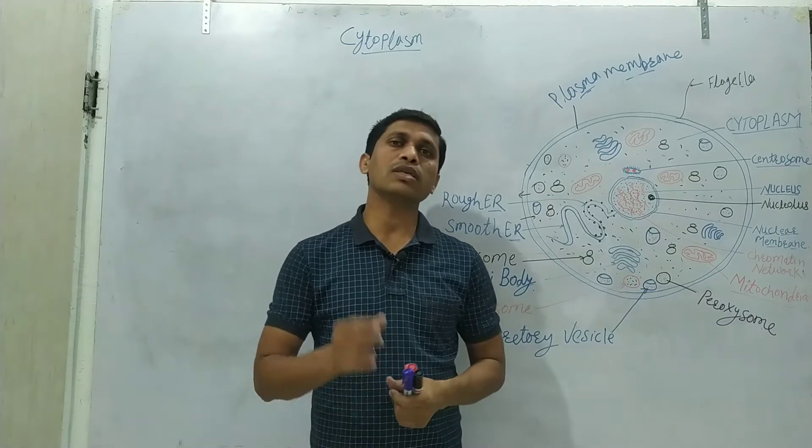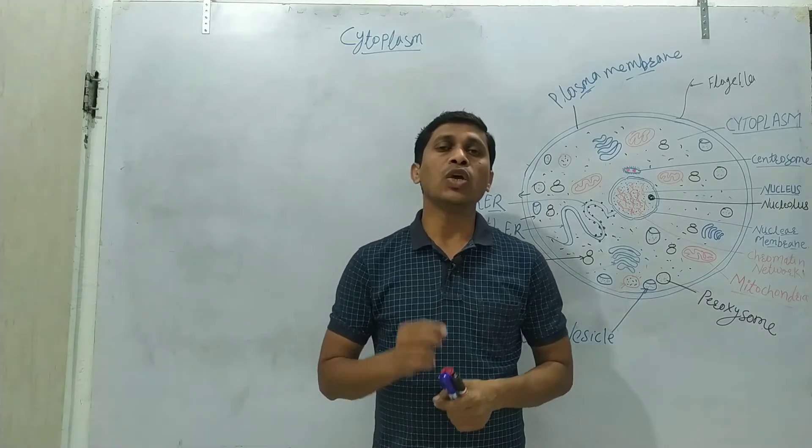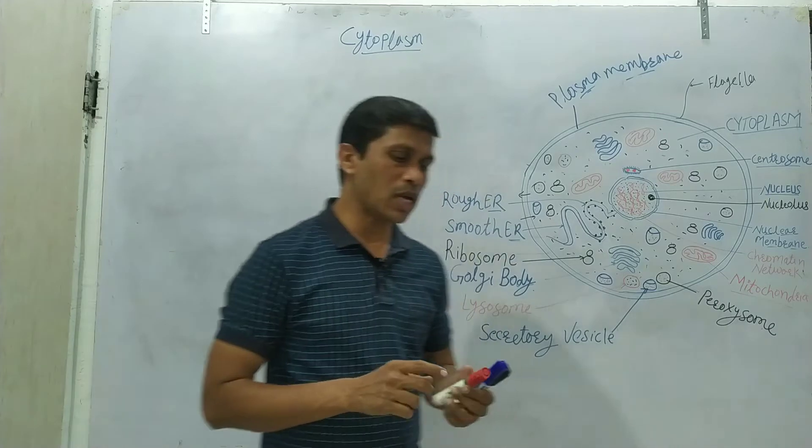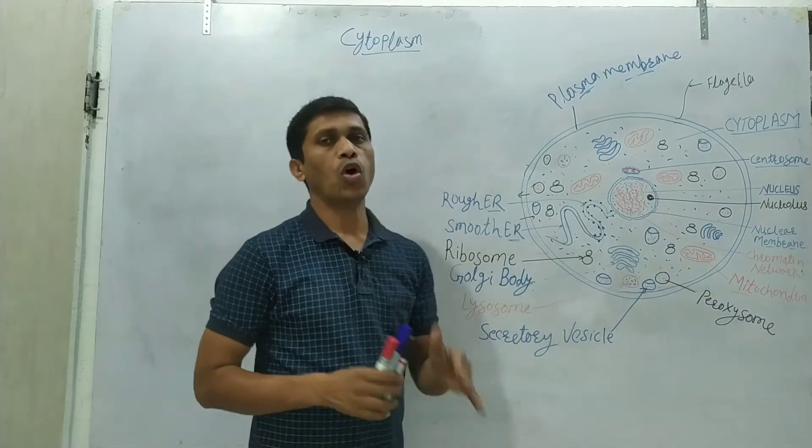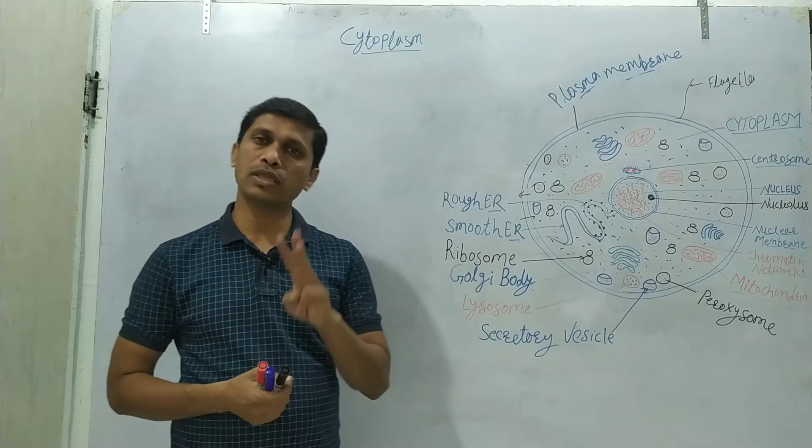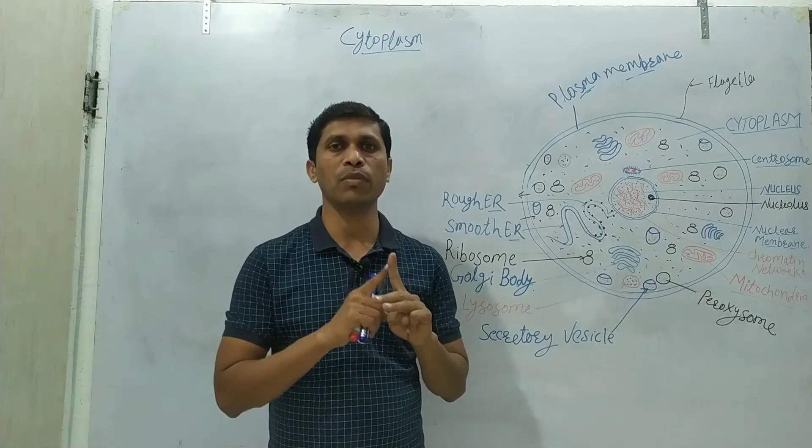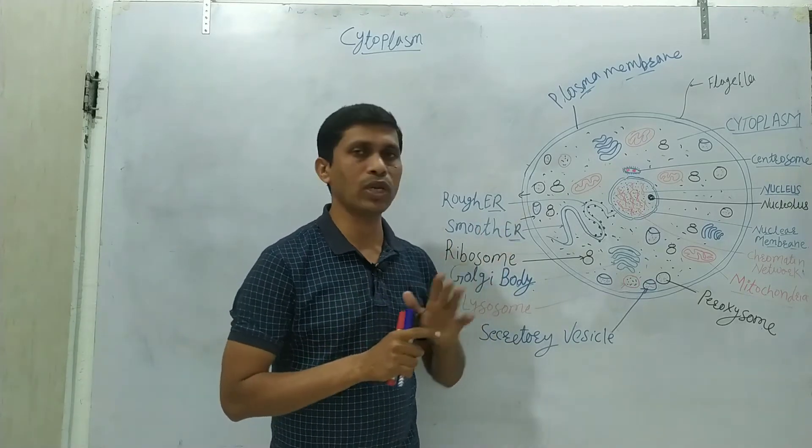in my last lecture, we learned the cell membrane. Today, we are learning the cytoplasm which is the second component of the cell. Already, we learned there are three basic components of the cell: first one is the cell membrane, cytoplasm and nucleus.